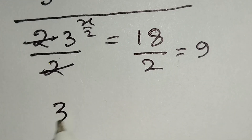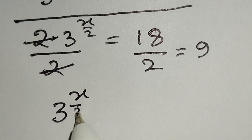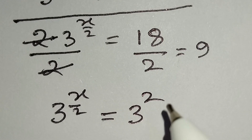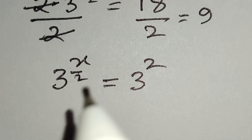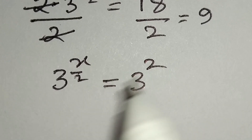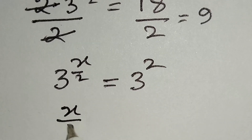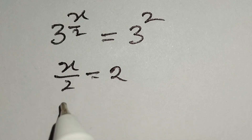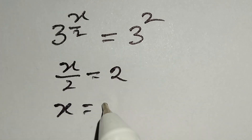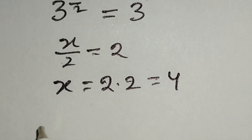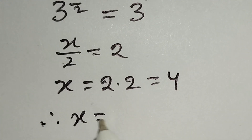We can write 9 as 3 squared. Since both sides have the same base, the powers must be equal, so x over 2 is equal to 2, which gives x is equal to 2 times 2, equals 4. Therefore x is equal to 4.